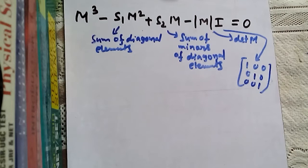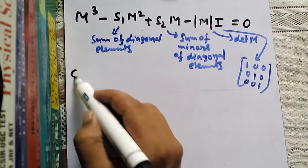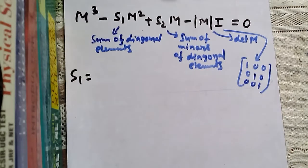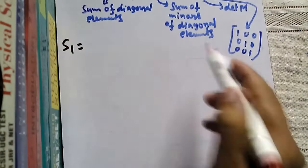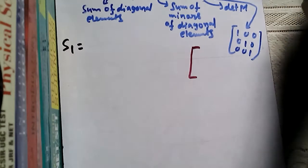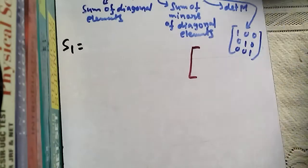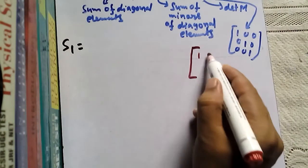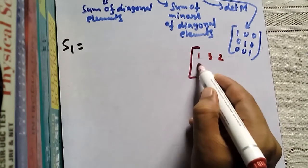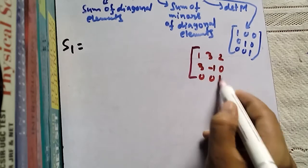To find the solution, we need to find S1, S2, and det(M). Let us first write down our matrix. Our matrix M is: row 1: 1, 3, 2; row 2: 3, −1, 0; row 3: 0, 0, 1.